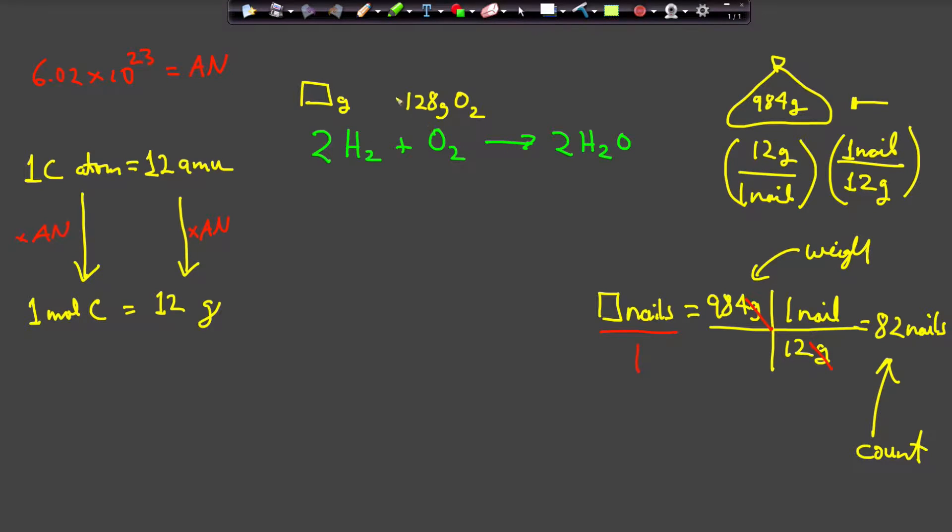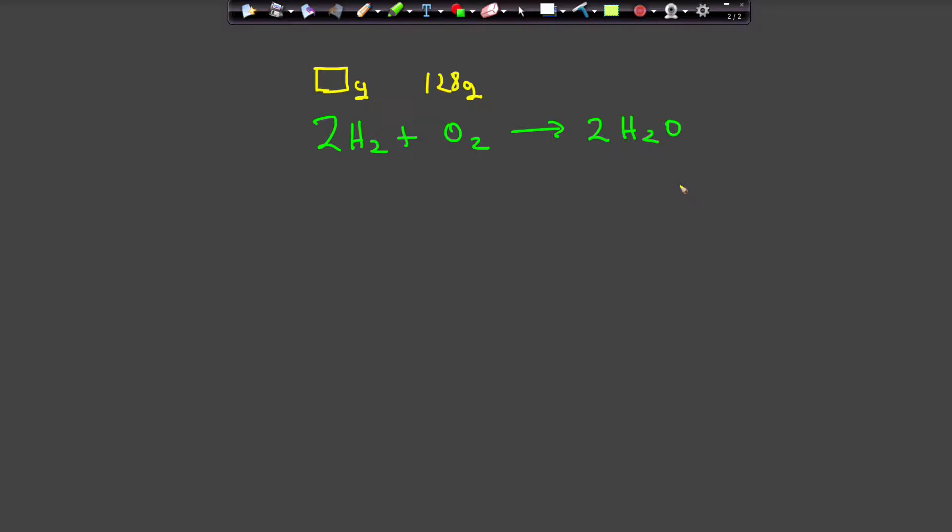With those two fundamental aspects now solved, let's return to our problem and solve it with dimensional analysis. How many grams of hydrogen am I going to need to react with 128 grams of O2? I'm going to write grams above the chemical equation and moles below - grams is my weight and moles is a count.